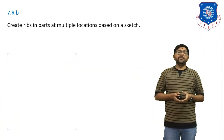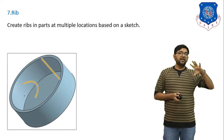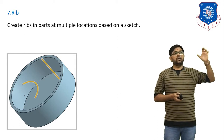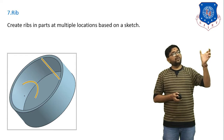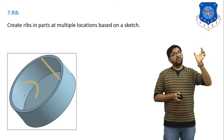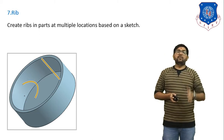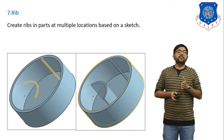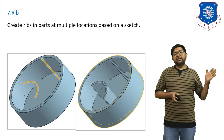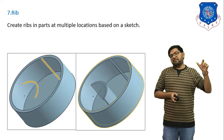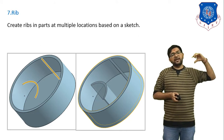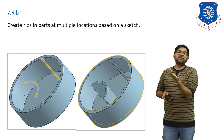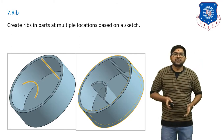Next is rib. If we have an object and want to grow a portion of the body in 2D, we draw a sketch and apply the rib command, which fills and extrudes that sketched portion up to the adjacent surface. You can create ribs in parts at multiple locations based on the sketch. In the example, two sketches are drawn — one half-circle and two straight lines — and after applying rib, those portions are extruded down to the bottom surface to form a 3D rib feature.